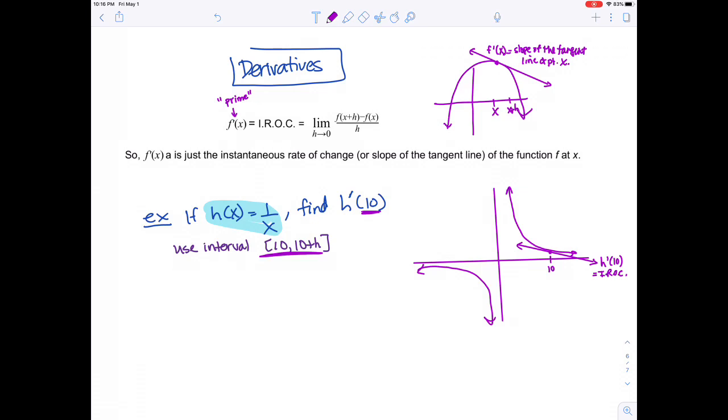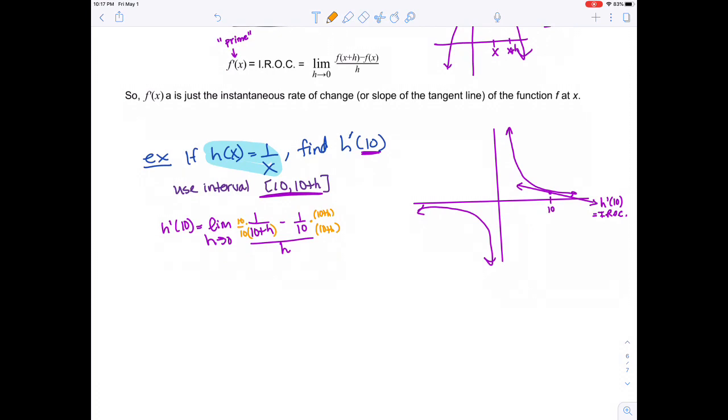h prime of 10 equals the limit as h approaches 0 of (1 over 10 plus h minus 1 over 10) all over h. We need to simplify this algebraically. This is about getting a common denominator - this is the hard part. I'm going to multiply this by 10 plus h, and multiply this by 10. I'm giving you a difficult one so you get practice simplifying algebraically. My common denominator is 10 times 10 plus h.